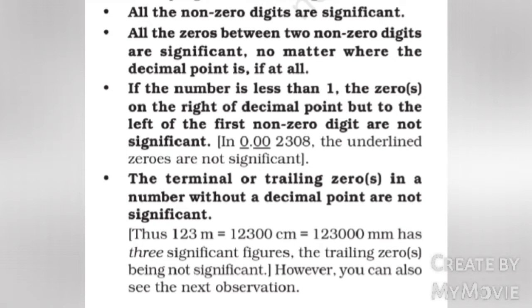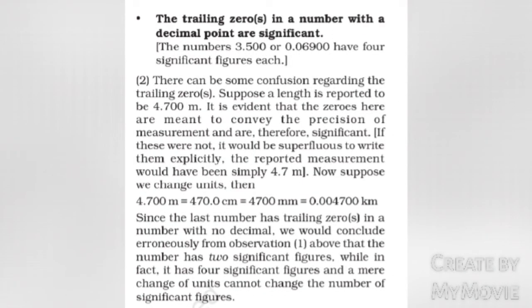Rule 4: The terminal or trailing zeros in a number without a decimal point are not significant. Thus, 1.23 m equals 123.00 cm equals 123.00 mm — this has three significant figures, the trailing zeros being not significant. However, the trailing zero or zeros in a number with a decimal point are significant. The numbers 3.500 or 0.06900 have four significant figures each.